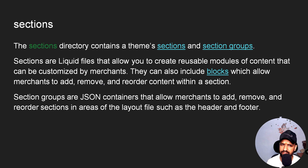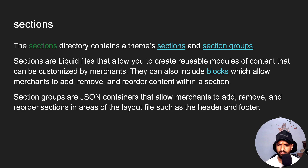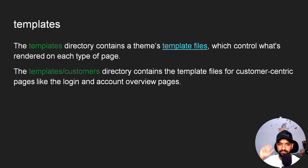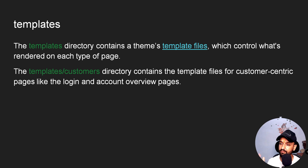Sections may contain section or section group liquid files that create reusable modules — meaning you can use them anywhere inside your theme. They can be easily customized by merchants and can include blocks, allowing merchants to add, remove, and reorder content. Section groups are JSON containers that allow merchants to add, remove, and reorder sections in areas of the layout files such as the header and footer. The snippets directory contains liquid files holding smaller reusable snippets of code.